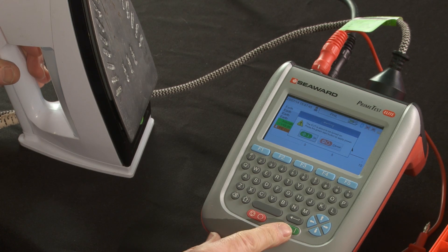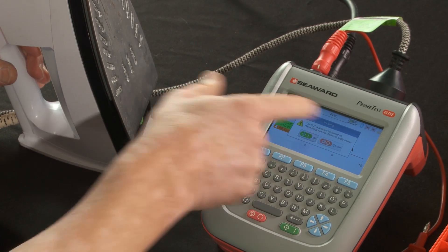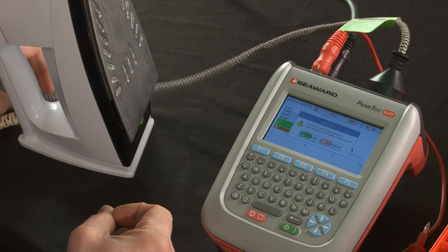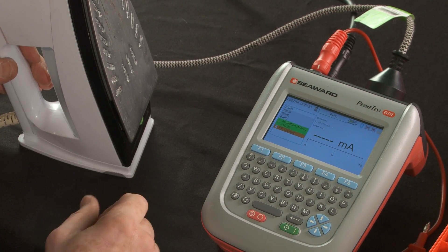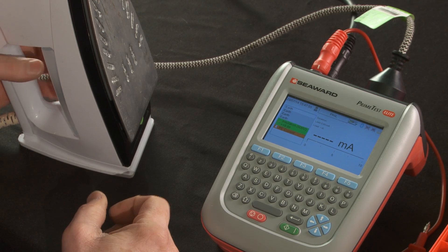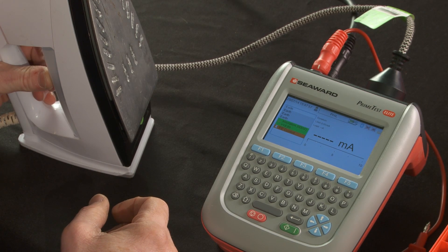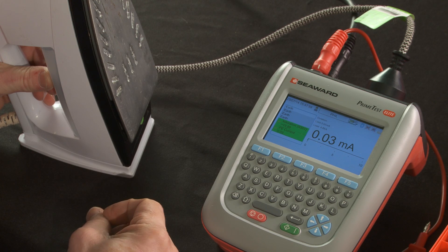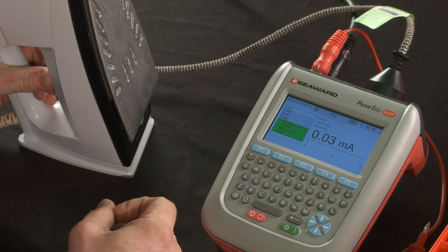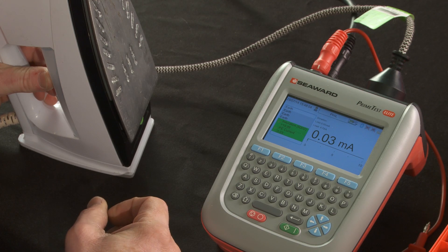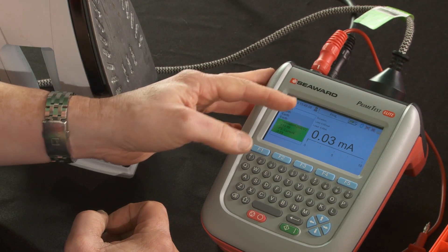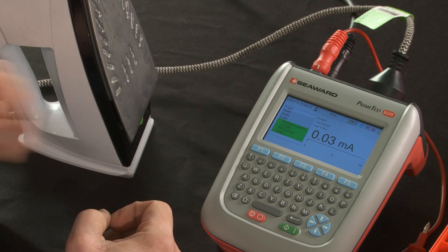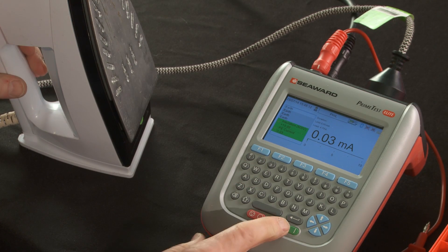So now we're doing the leakage test. This is just telling you that leakage test is going to be turned on. Now, because this is an earth appliance, we're looking for less than 5 milliamps. In this case, it's 0.04. And also, something new with this tester is the load. So you can see how much current it's drawing during the test.